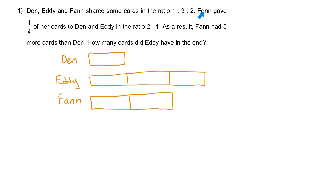After that, it mentioned Fan gave a quarter of her cuts to Dan and Eddie. She is going to give away a quarter of her cuts. It will be much easier if we cut each unit into 2 so that we have 4 equal parts. If we cut each unit into 2, we must do the same for the rest.